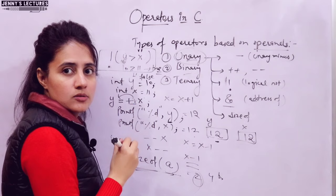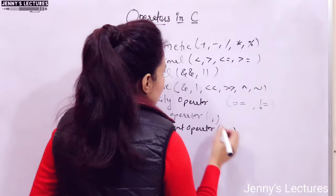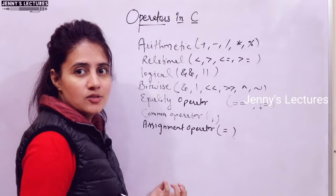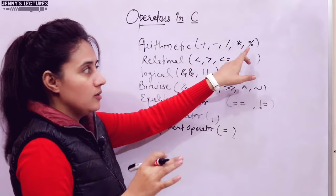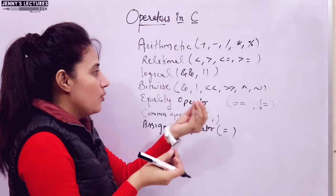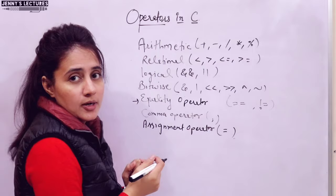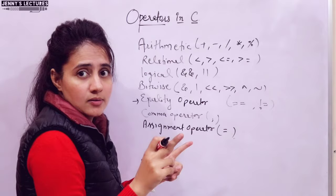Next are binary operators, which require two operands. Types include: arithmetic operators (plus, minus, divide, multiply, modulo), relational operators (less than, less than or equal to, greater than, greater than or equal to), logical AND and OR, bitwise operators (bitwise AND, OR, left shift, right shift, XOR, negation), equality and not-equal operators, comma operator, and assignment operator. These will all be discussed in detail in separate videos.